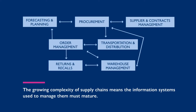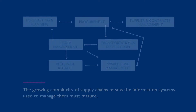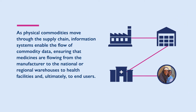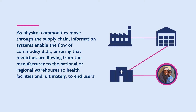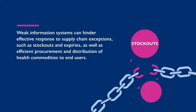The growing complexity of supply chains means the information systems used to manage them must mature. As physical commodities move through the supply chain, information systems enable the flow of commodity data, ensuring that medicines are flowing from the manufacturer to the national or regional warehouses to health facilities and ultimately to end users. Weak information systems can hinder effective response to supply chain exceptions such as stockouts and expirees, as well as efficient procurement and distribution of health commodities to end users.